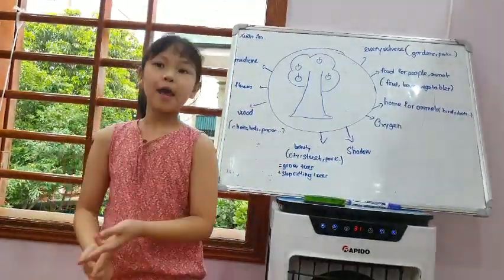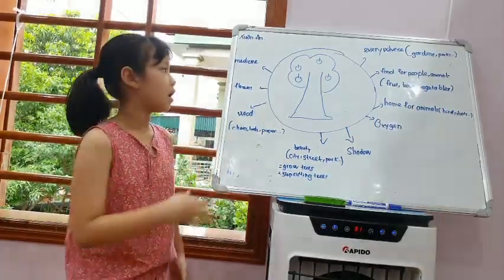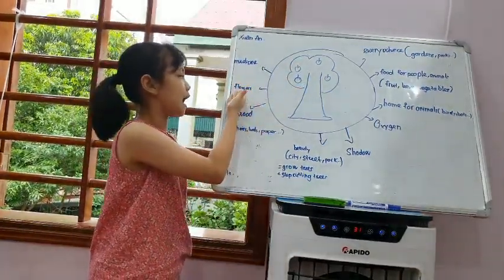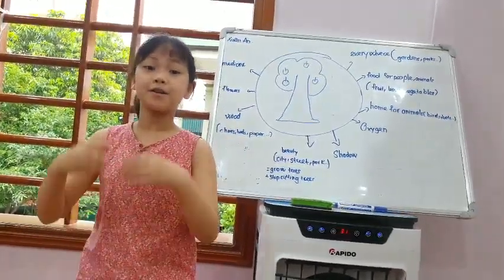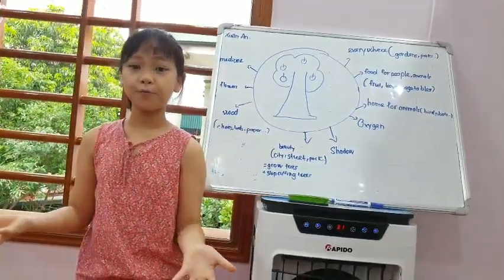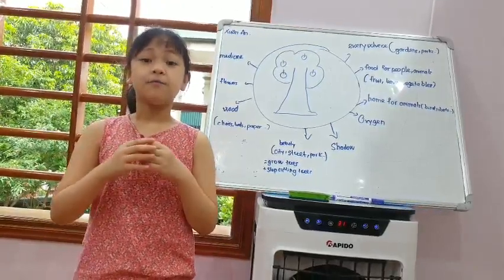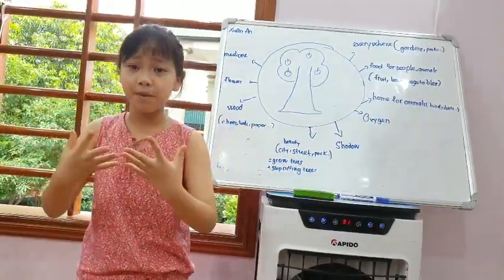Wood makes paper and lots of things. Trees have flowers. Flowers are beautiful and colorful. Flowers have a good smell.